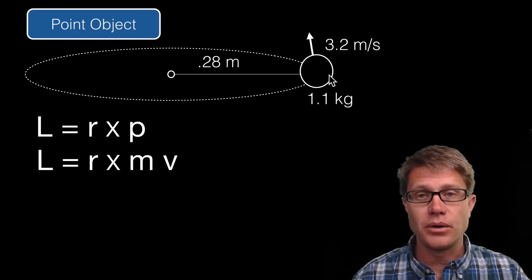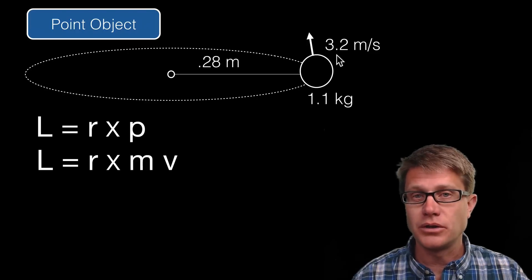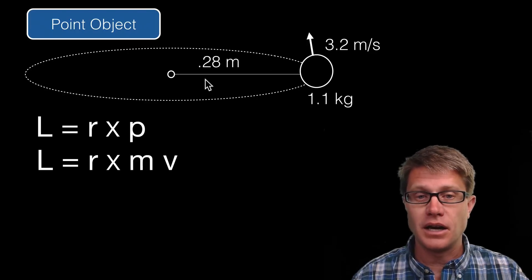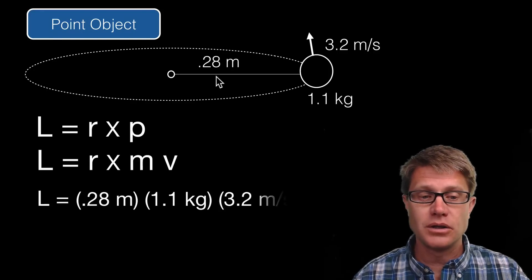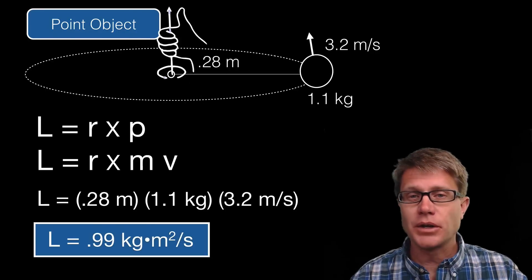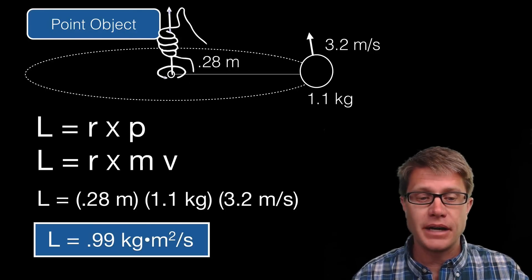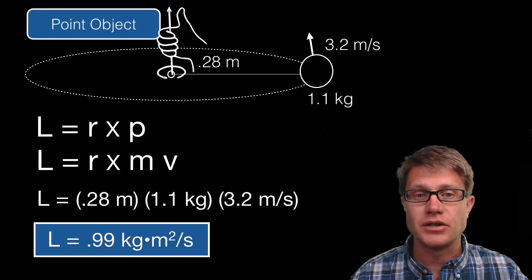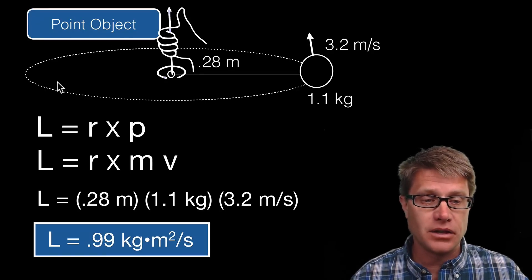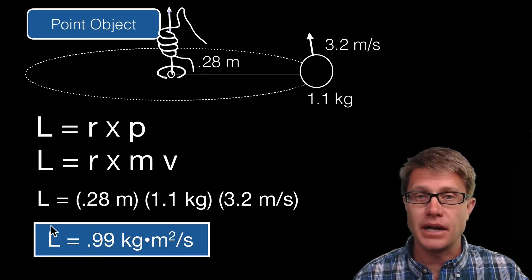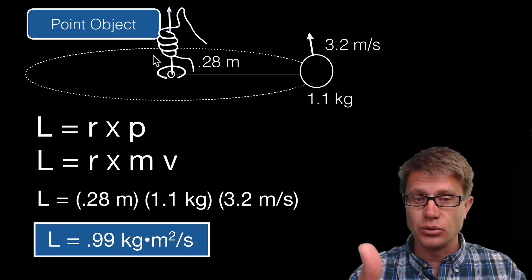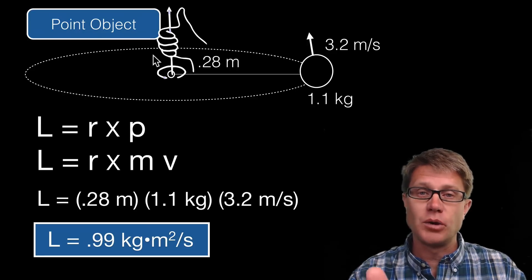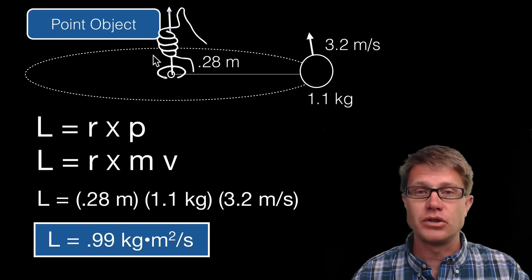For example, an object of 1.1 kilogram mass traveling at 3.2 meters per second, with about 28 centimeters distance — we multiply those values out and get an angular momentum of 0.99 kilogram meters squared per second. This is a vector value, so we must add a direction. Since the rotation is in this direction, the right hand rule shows the angular momentum is acting in the upward direction.